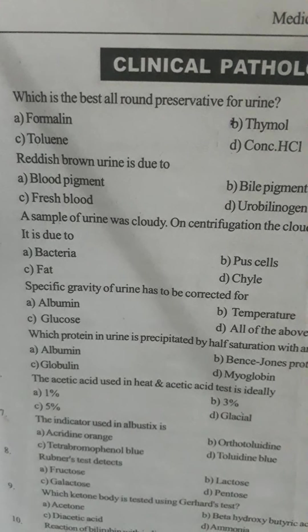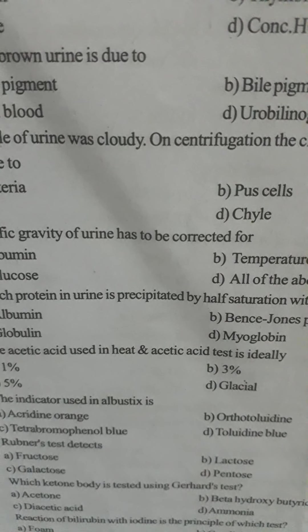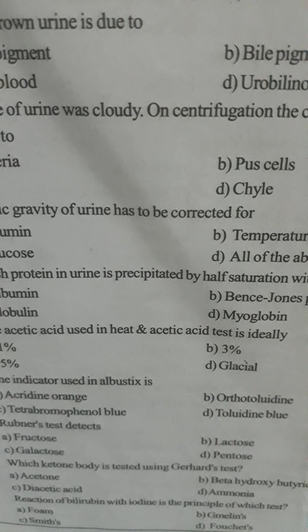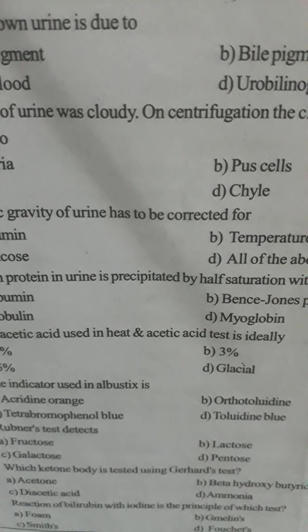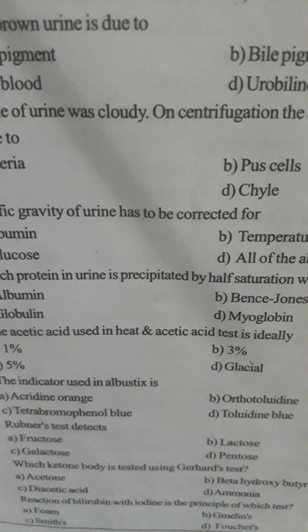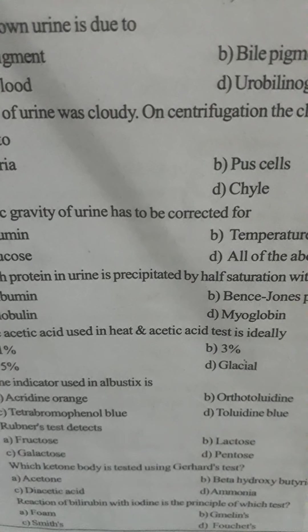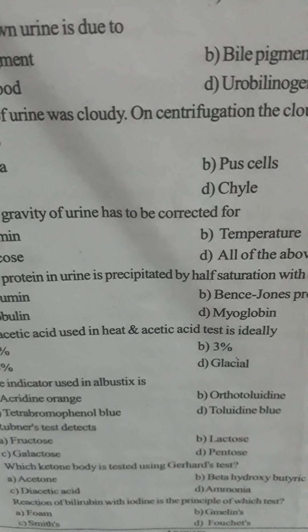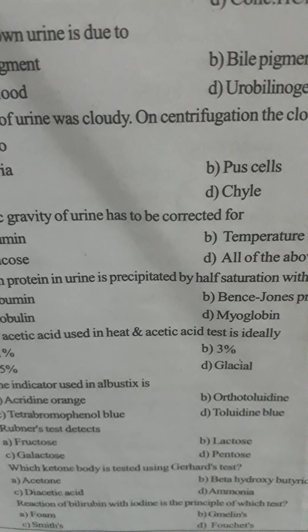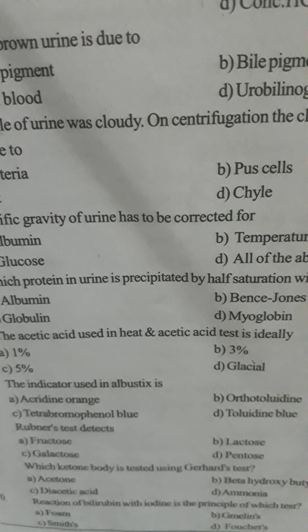Question number ten: the reaction of bilirubin with iodine is the principle of which test? Option A: Form test, Option B: Gmelin's test, Option C: Smith's test, Option D: Fouchet's test. The correct answer is Option C, Smith's test.